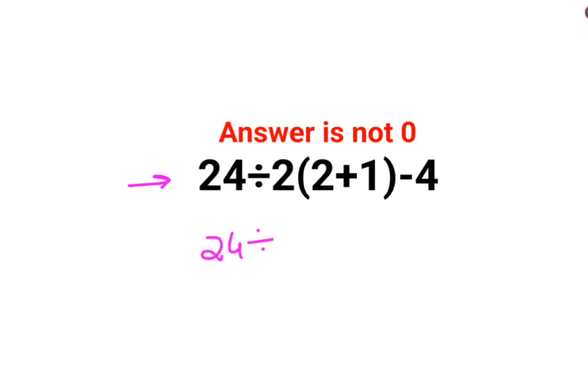2 plus 1 is 3 minus 4. So this is 24 divided by 6 minus 4, which is 4 minus 4, answer is 0. At this step a lot of people made the mistake because the answer for this question is not 0.